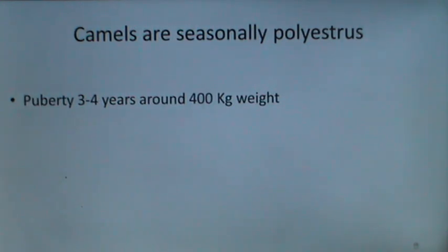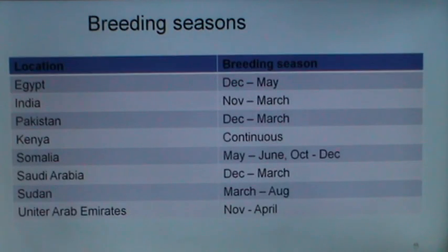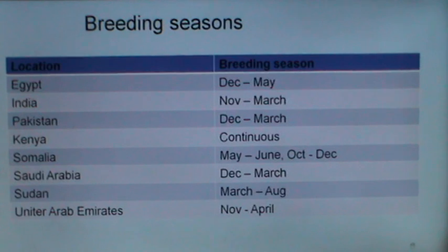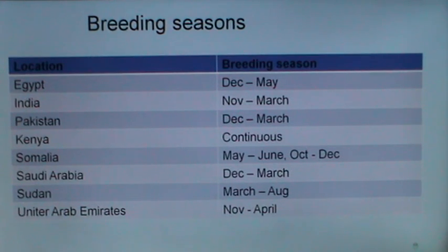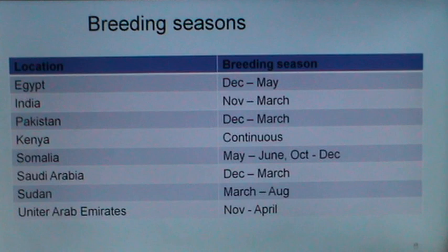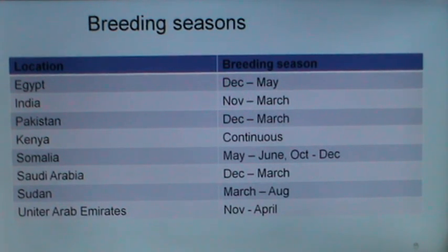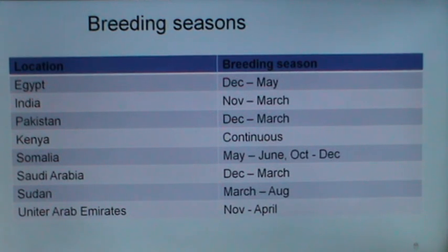Camels are seasonally polyestrous. Puberty occurs at 3 to 4 years at around 400 kg of weight. Camels are seasonal breeders and breed during the time of year when days are short. In Egypt, the breeding season extends from December to May; in India from November to March; in Pakistan from December to March. In Kenya, the breeding season has been reported to be continuous.